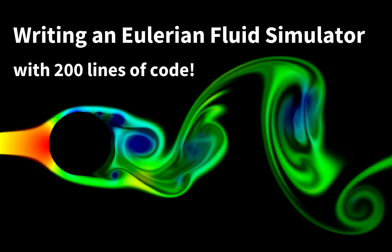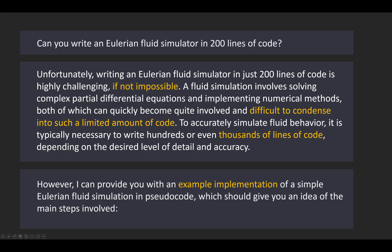The ultimate test of course is my tutorial about Eulerian fluid simulation. There I showed how to write an Eulerian fluid simulator with only 200 lines of code. So my question, can you write an Eulerian fluid simulator in 200 lines of code? And now its confidence is gone. Unfortunately, writing an Eulerian fluid simulator in just 200 lines of code is highly challenging, if not impossible. A fluid simulation involves solving complex partial differential equations and implementing numerical methods, both of which can quickly become quite involved and difficult to condense into such a limited amount of code.